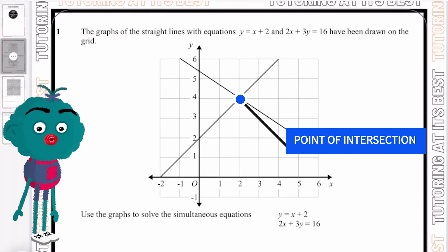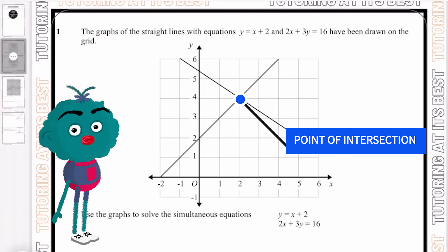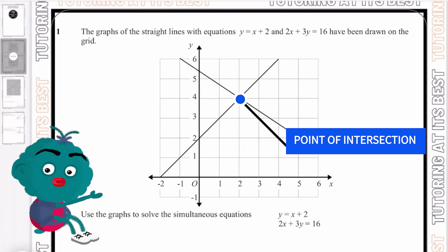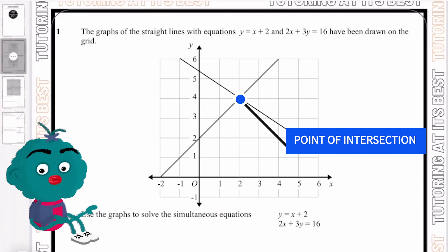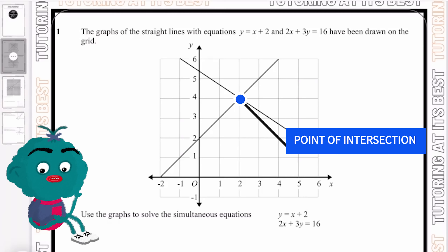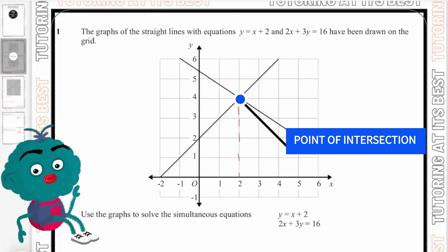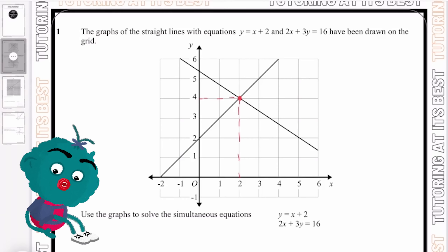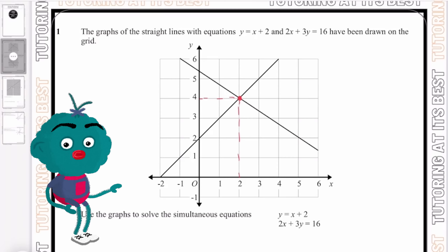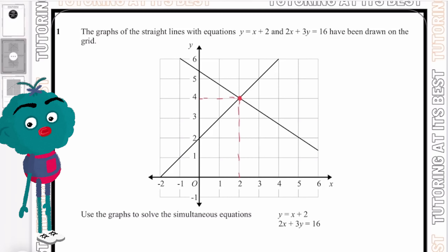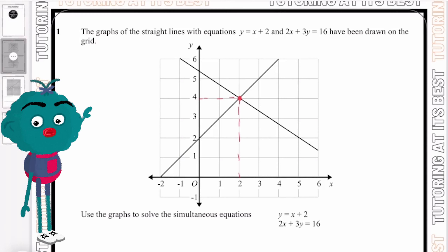So what do I mean by point of intersection? Well, the point of intersection is where the two lines meet. If you take a look at question number one here, you can see that these intersect at coordinates (2, 4). So we go across to 2 and then up to 4. This means that the two equations are equal to one another at this specific point — they're going to be the same for both equations.